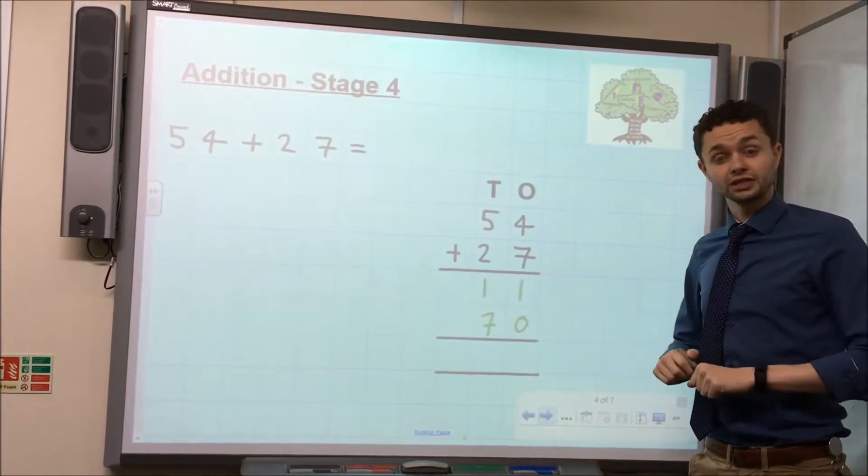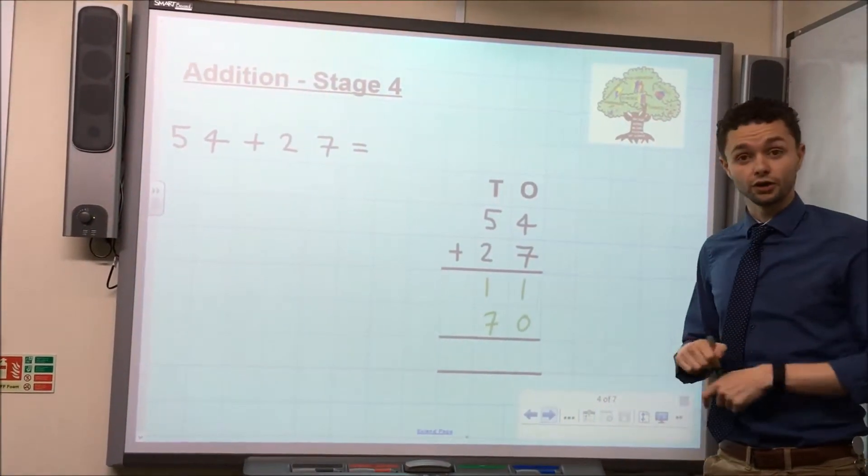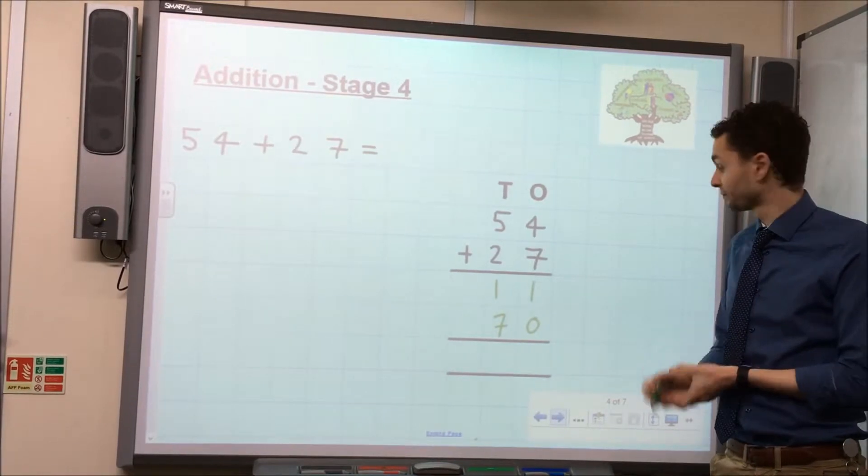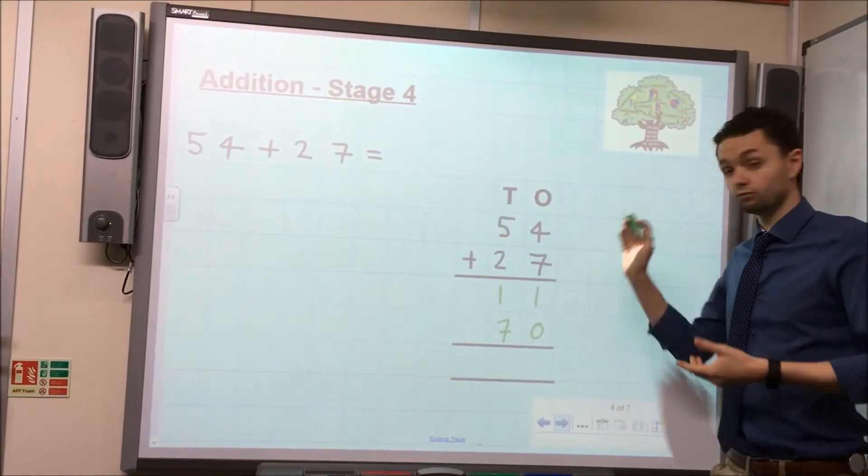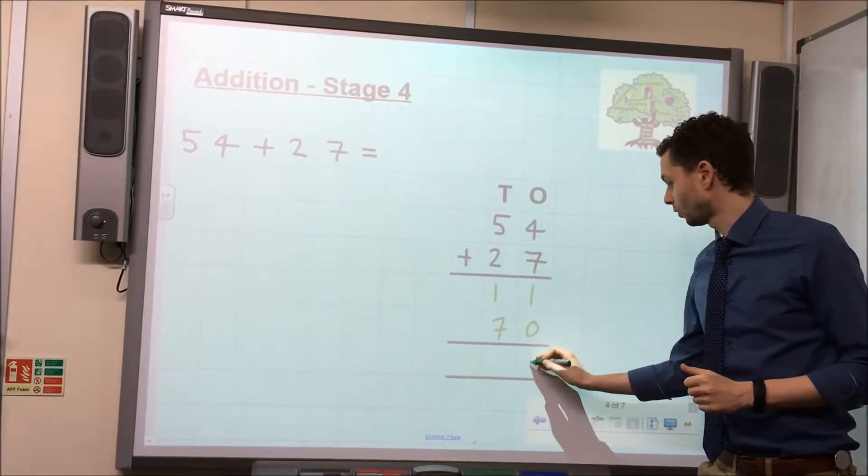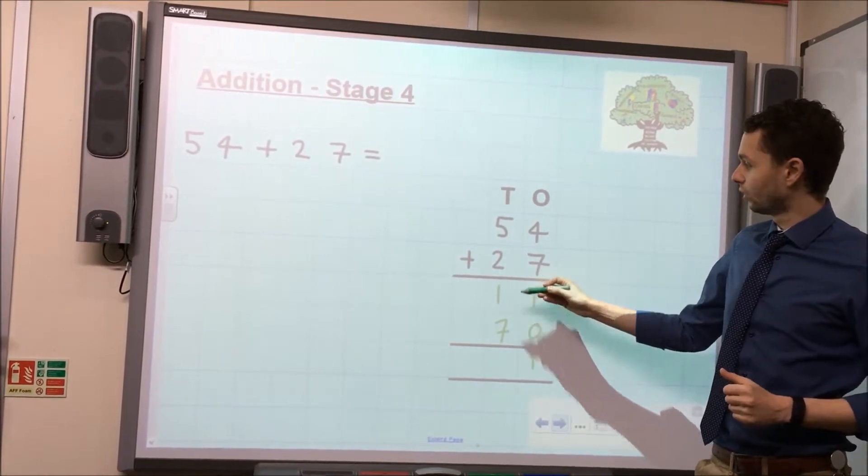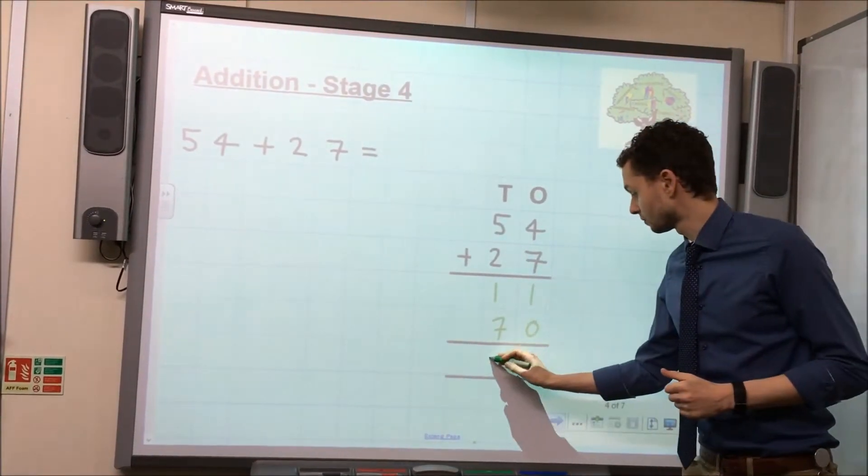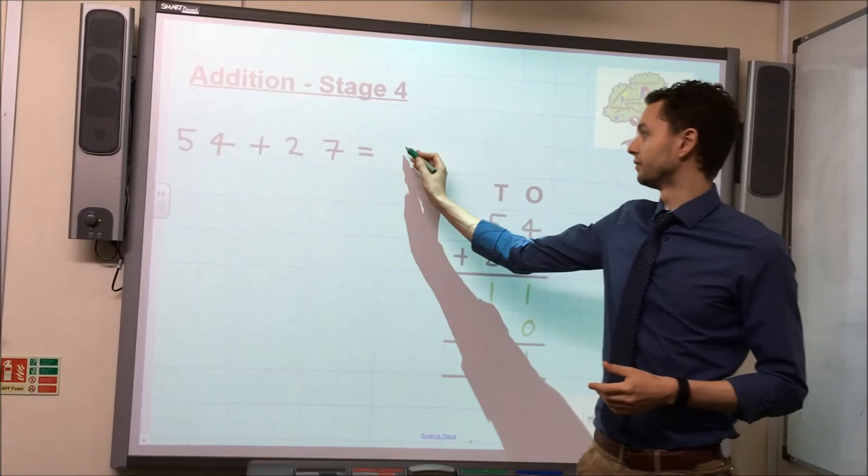Then, the final stage is to add these two steps together to give us our final answer. So, one, one, add no ones or zero, gives us one. Seven 10s add one 10, gives us eight 10s, which gives us the answer of 81.